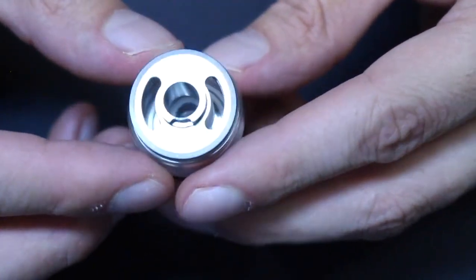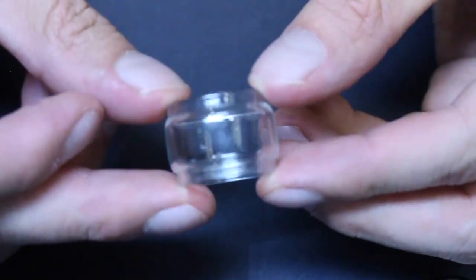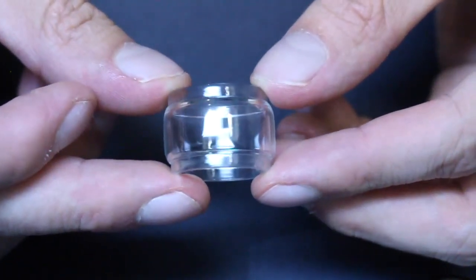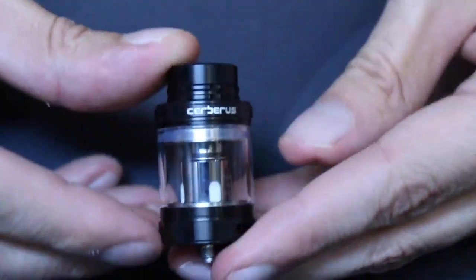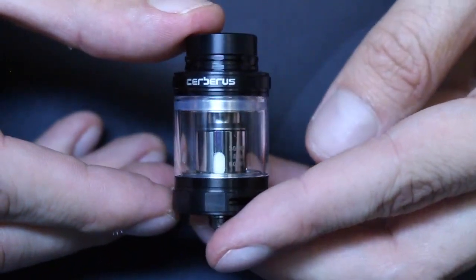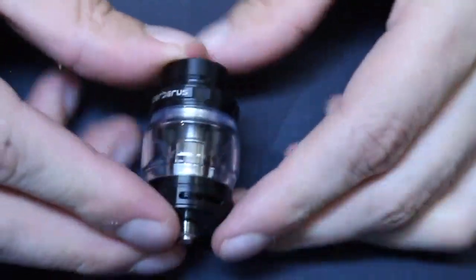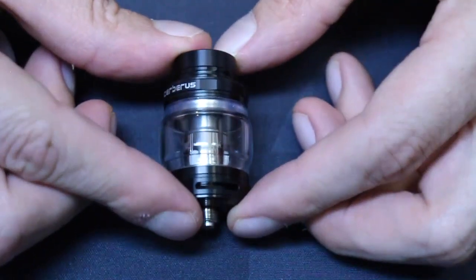The fill holes are big, so no problems getting e-juice in there. The Cerberus comes with bubble glass pre-installed, which holds a max of 5.5 mils. The package also has a regular straight glass tank which holds 4 mils. If you're running this tank at high wattage, which is what it's designed to do, you'll probably want the extra capacity of the bubble glass.